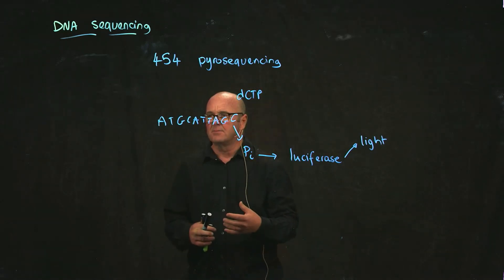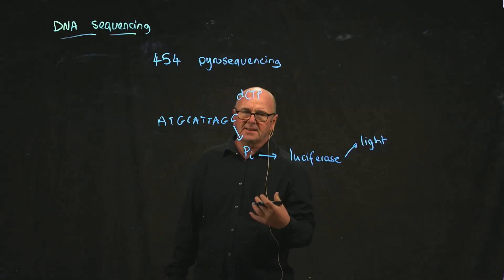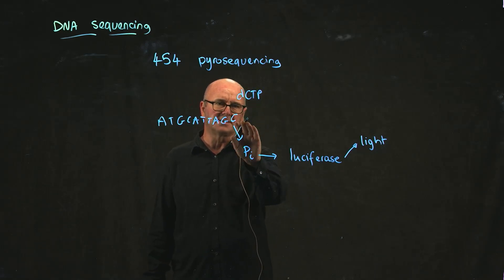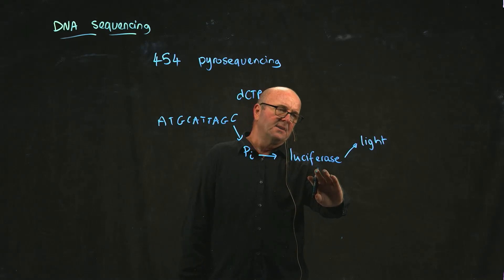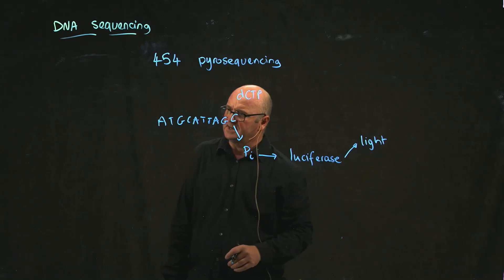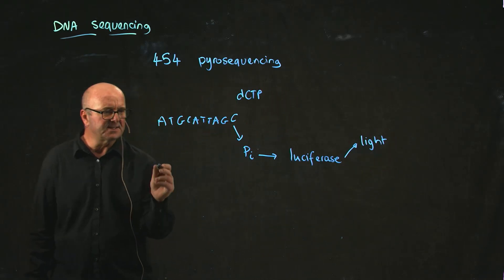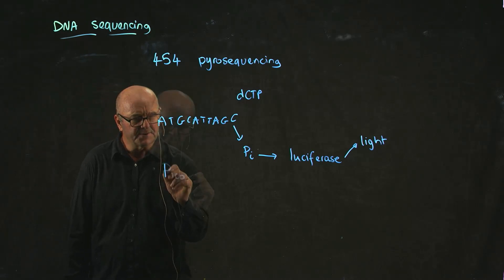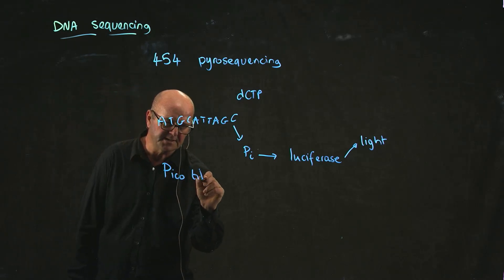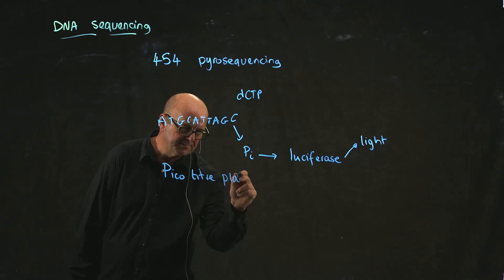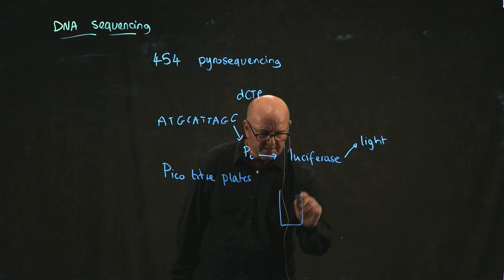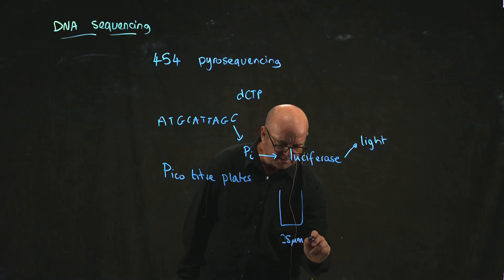Pyrosequencing started in the early 2000s. They have this technology where they could add dCTP, have a Pi, have a flash of luciferase and detect it. The way that they detect it is they use what's called picotiter plates, which have very small wells that are something like 25 micrometers across.